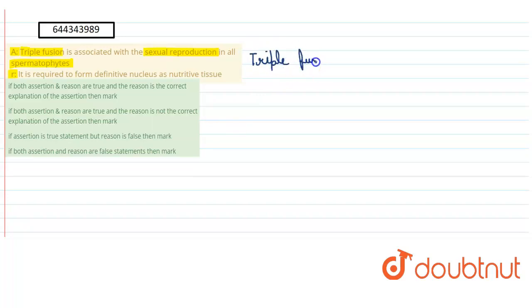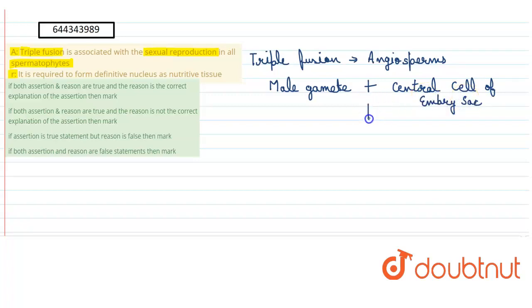Triple fusion is seen in case of angiosperms. What happens is that one male gamete fuses with the central cell of the embryo sac and it leads to the formation of PEN, that is primary endospermic nucleus.